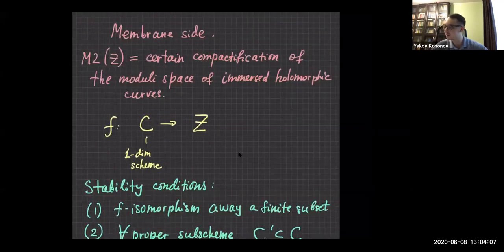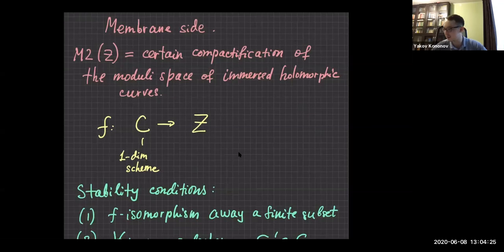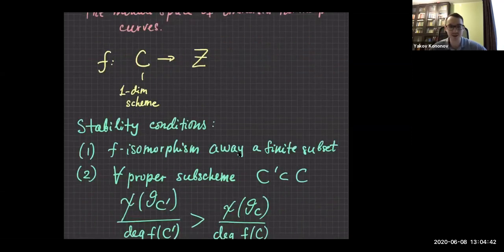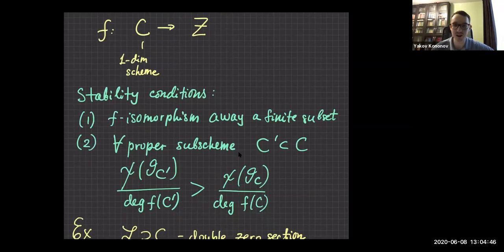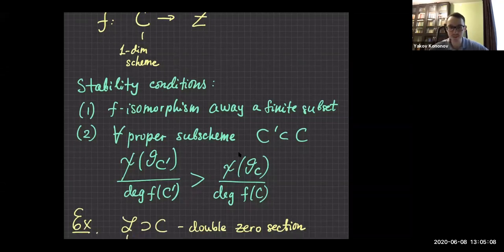On the membrane side, the space of M2 membranes is a certain compactification of the moduli space of immersed holomorphic curves. C is a one-dimensional scheme mapped to X, and we impose a stability condition so that in nice situations there are a finite number of invariant stable membranes. The first condition is that f should be an isomorphism almost everywhere, and the second is that for any proper sub-scheme C', the slope should be larger than the slope for C, where the slope is the ratio of the Euler characteristic over the degree.